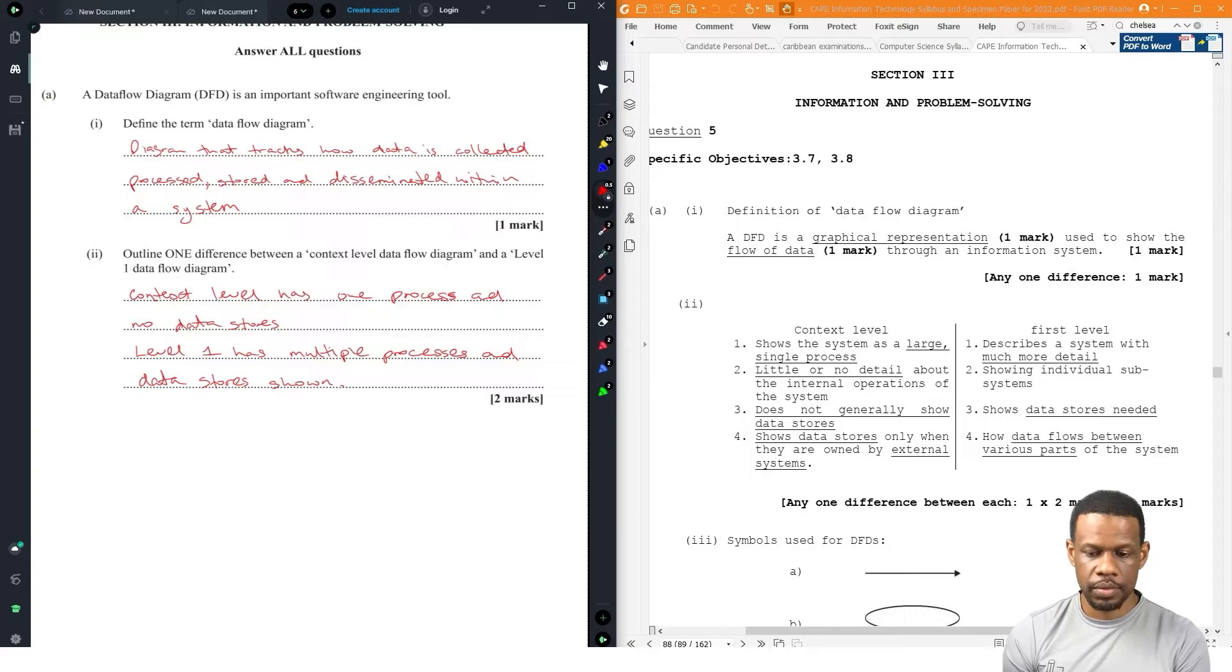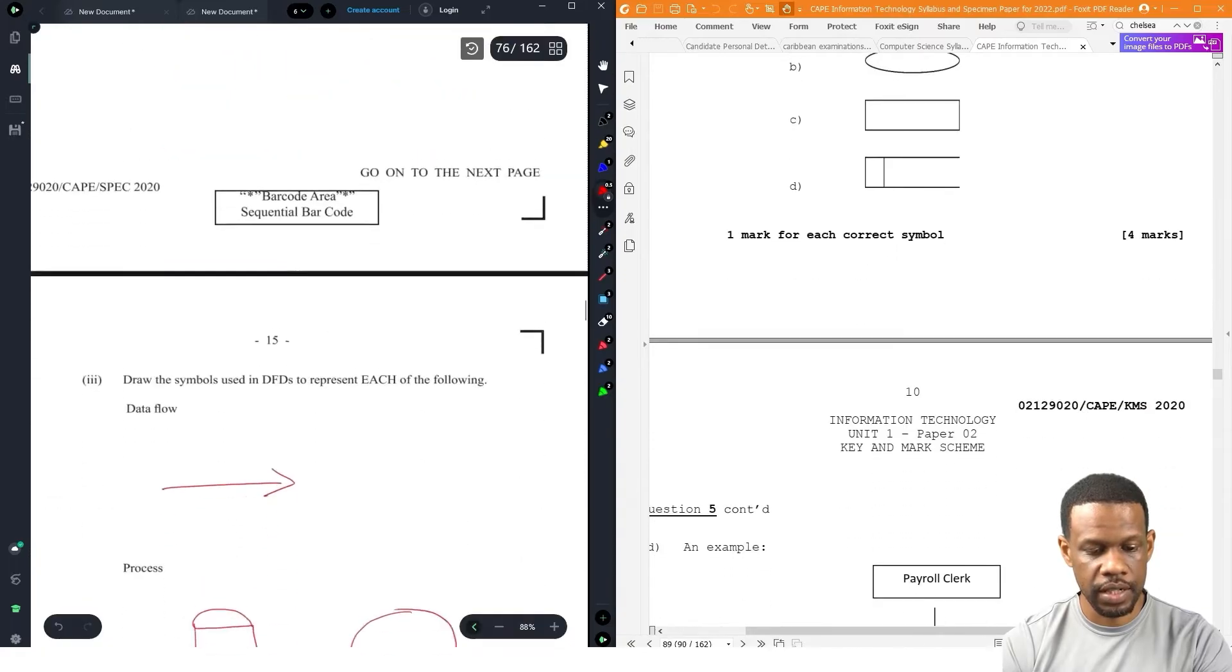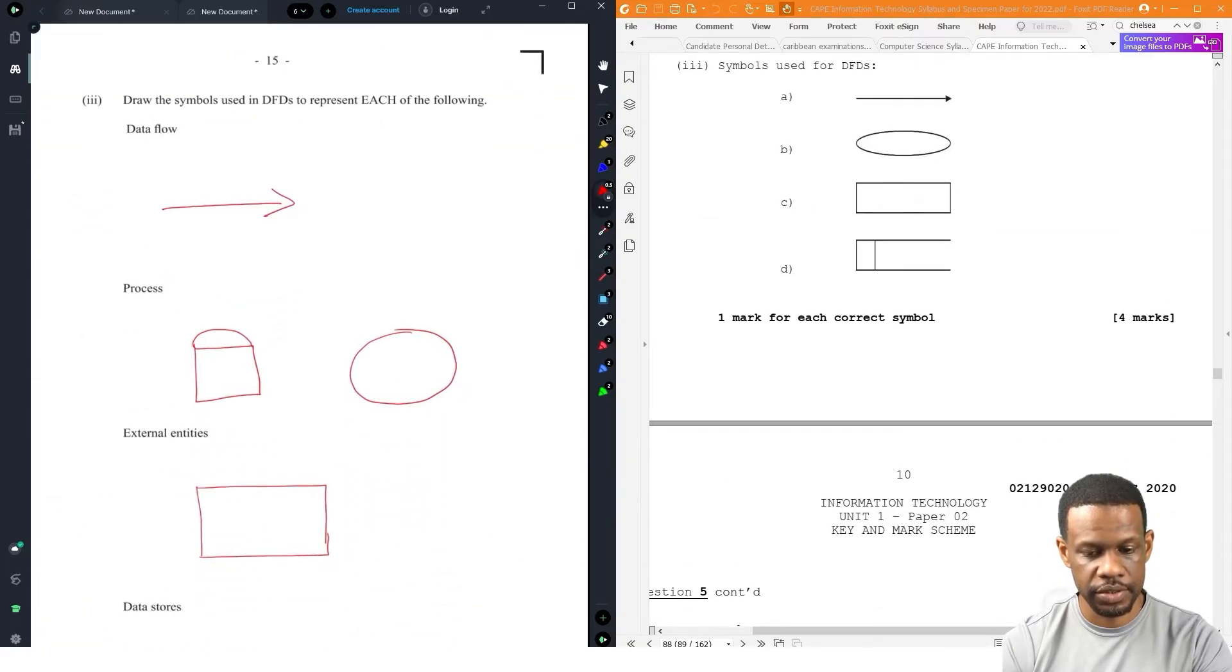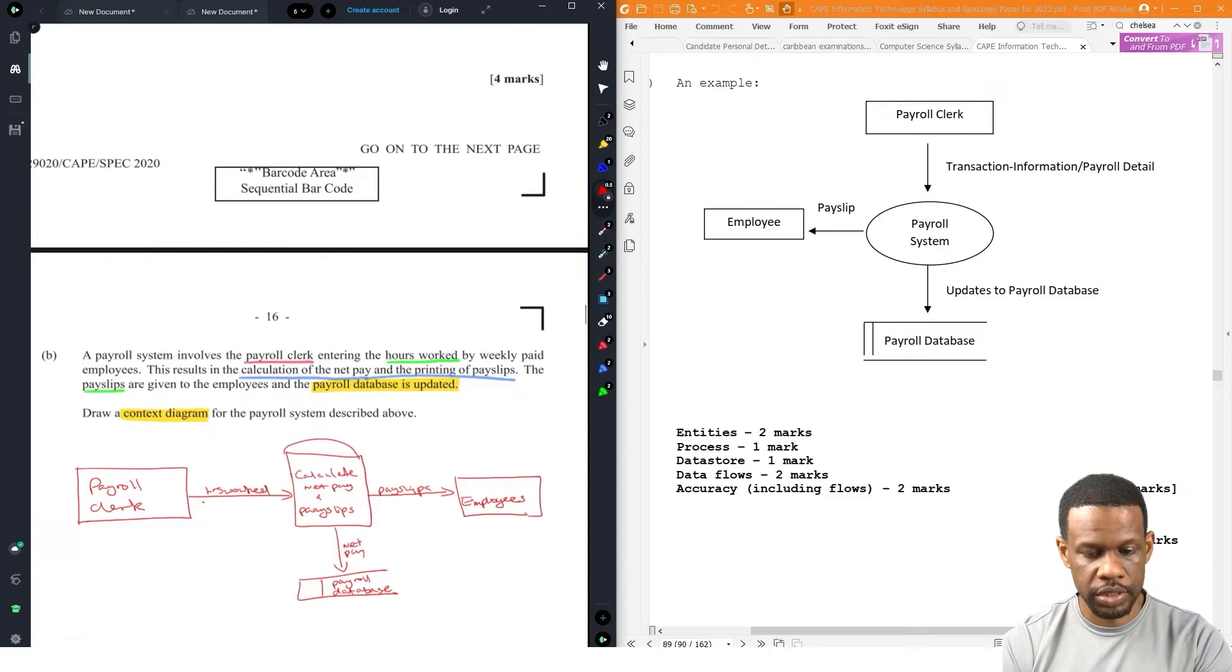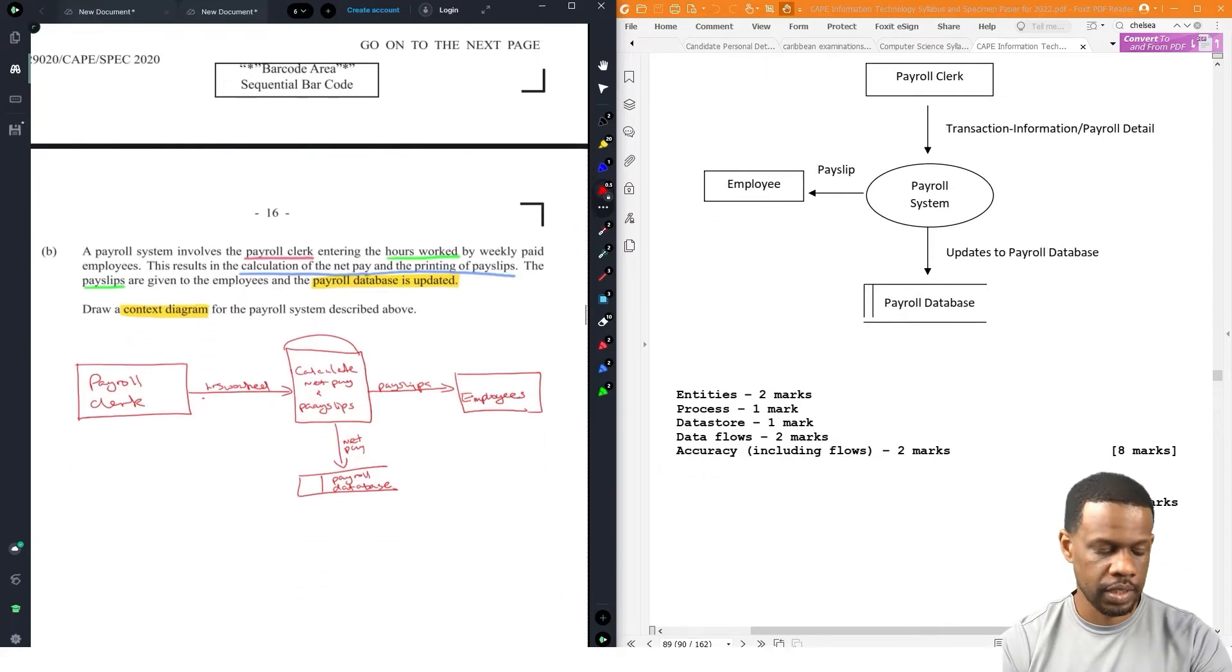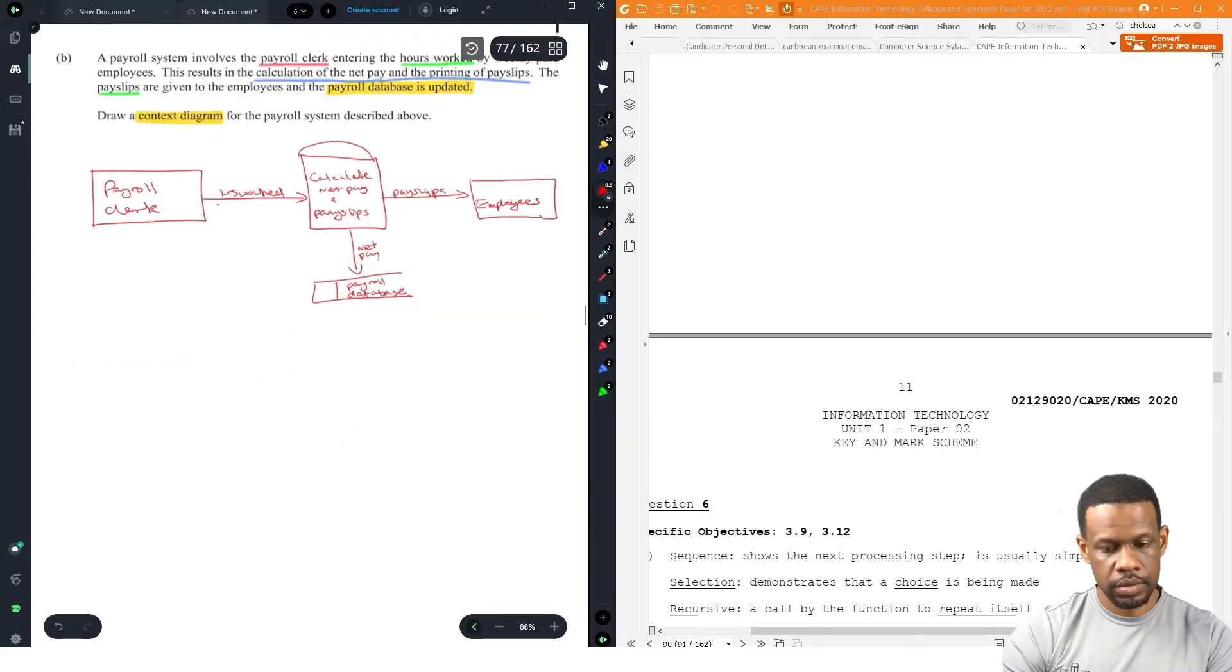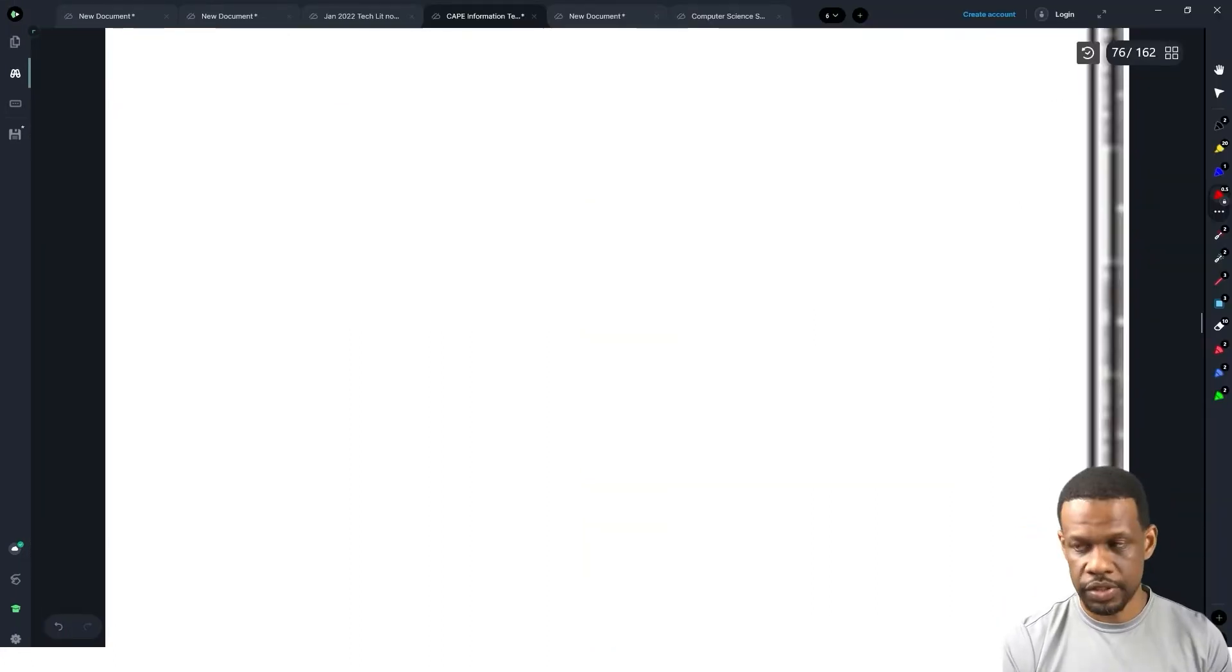Level 1 describes the system in much detail, shows individual subsystems, shows data stores needed. Symbols for the data flow diagram. They have the process as ovals. You can put both if you want to make sure you're clear. So they have payroll clerk puts in the hours worked, payroll system will calculate the payslips, send the payslips to employees, update payroll database. Just whenever they give you a question asking for a data store, even if there's a context diagram, include it.